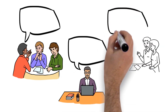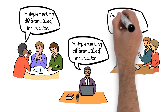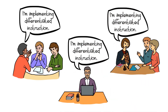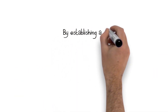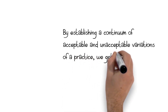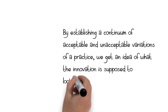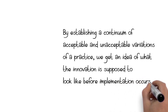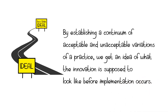An IC Map describes the behaviors and practices you'd expect to see of teachers, students, and administrators implementing an innovation. It provides a common language when talking about and implementing an innovation. By establishing a continuum of acceptable and unacceptable variations of a practice, we get an idea of what the innovation is supposed to look like before implementation occurs. In addition to providing a common language, an IC Map is like a roadmap. It describes the practices and behaviors that help teachers and administrators get to where they want to go.